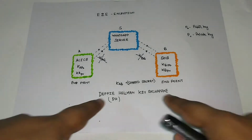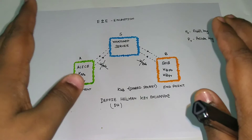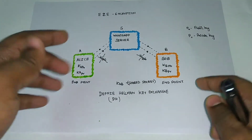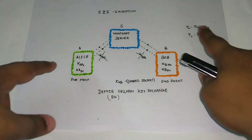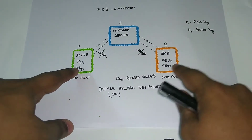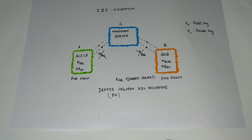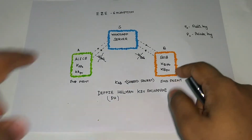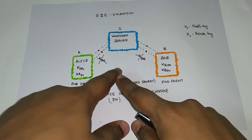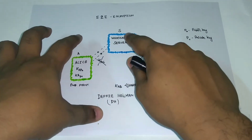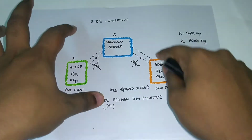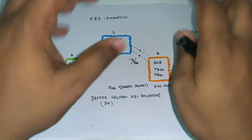By encrypting their messages using this shared secret KAB, in order to establish this shared secret they use something called the Diffie-Hellman key exchange. They exchange certain parts of their public and private keys — KPB, KPV, and KBP — in order to establish the shared secret KAB. Any message which Alice wants to send to Bob uses the shared secret to encrypt those messages, which is only known to Alice and only known to Bob. These messages are sent over the WhatsApp server, but even WhatsApp cannot access that information — only Bob can decrypt and access it.